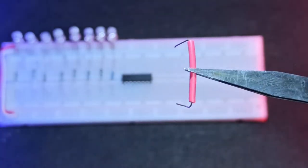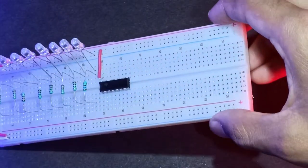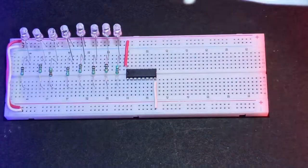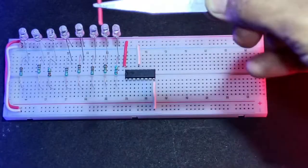First, connect the power connections for the shift register. For that, we have to connect pin 16 to 5V and pin 8 to ground. Next, connect pin 13 to ground pin. Connect pin 11 to 5V.